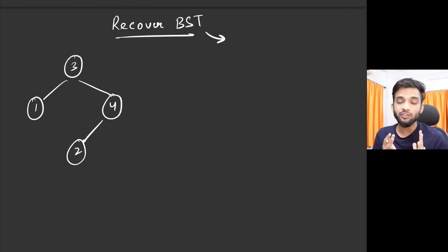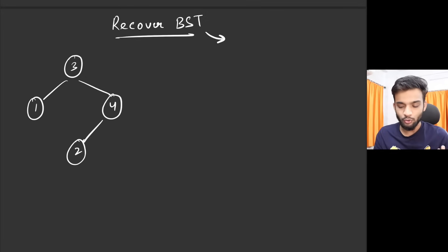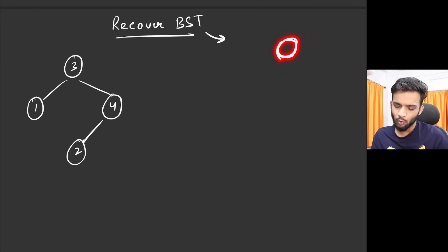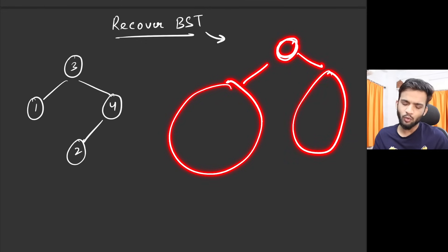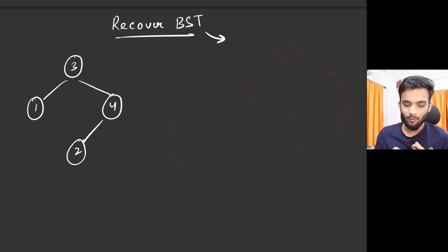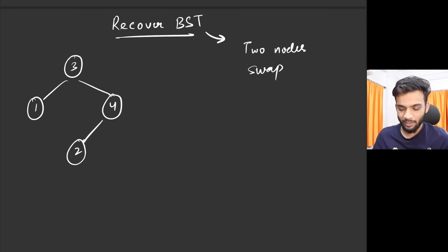The problem states that you will be given the root of a binary search tree representing a complete BST. A BST is a binary tree where everything to the left of a node is smaller than it and everything to the right is greater. The question states that in the given BST, there are two nodes which are swapped.